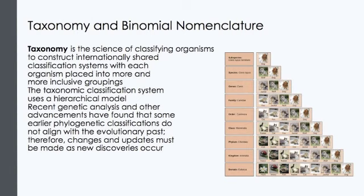Linnaeus specialized in plants. His system has two main characteristics: a two-part name for each species, and a hierarchical classification of species into broader groups of organisms. Linnaeus' system assigns to each species a two-part Latinized name, or binomial. The first part of the binomial is a genus — plural genera — to which the species belongs. The second part of a binomial is unique for each species within the genus. The two parts must be used together to name the species. For example, the scientific name for the Honduras rosewood tree is Dalbergia stevensoni. In binomial nomenclature, the first word, the genus, is always capitalized, and the second word, the species, is never capitalized. In its binomial context, it is italicized and Latinized.